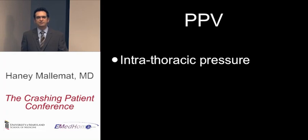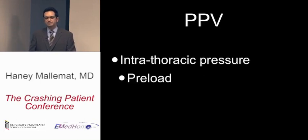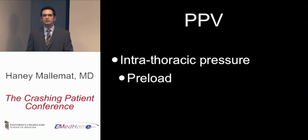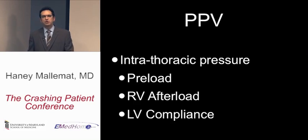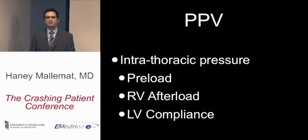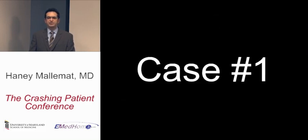Placing these patients on the ventilator with positive pressure ventilation increases intrathoracic pressure. This decreases preload by compressing the great veins returning to the right heart, and also increases right ventricular afterload, making it harder for the RV to squeeze blood into the left ventricle. Positive pressure also decreases left ventricular compliance, making the heart stiffer. A stiffer heart means decreased filling and decreased cardiac output. These factors all compound together to hurt critically ill patients.